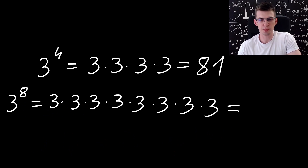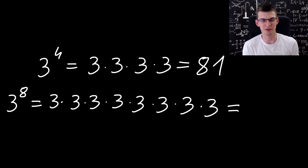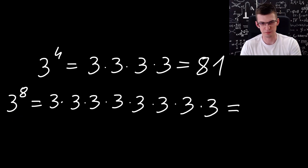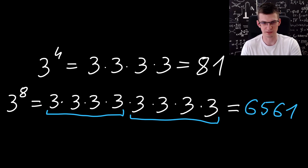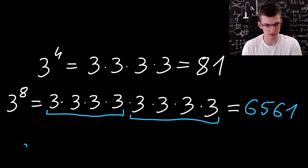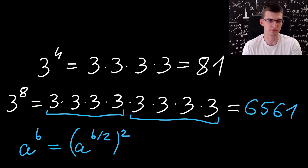The idea behind the algorithm is extremely simple. If I tell you that 3 to the 4th power is 81, and you have a computer or calculator so you can quickly make one operation, can you quickly compute 3 to the 8th power? The big hint is that it is 3 to the 4th times 3 to the 4th. A computer can in one operation — one multiplication — compute that this is 81 times 81, which is 6561. In general, 3 to the b power is 3 to the b/2 power times itself. So the formula is: a to b equals a to b/2, computed recursively, times itself.